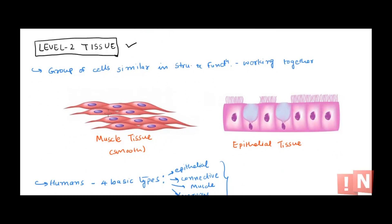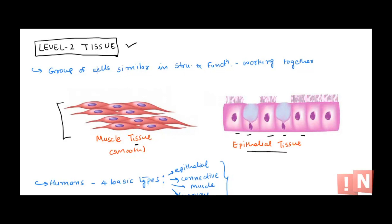You need many such cells together, and that is where the next level of organization comes in: a tissue. When you put all similar cells together that have similar structure and function, you form a tissue. For example, smooth muscle tissue — each cell can contract, so when they all contract together, the whole stomach contracts and mixing and churning of food occurs. Similarly, many epithelial cells put together form epithelial tissue.